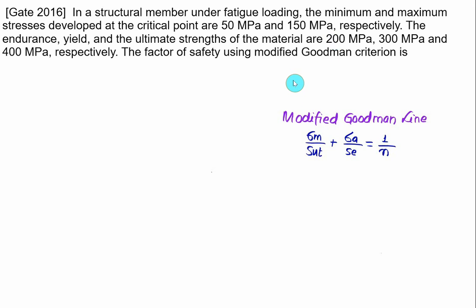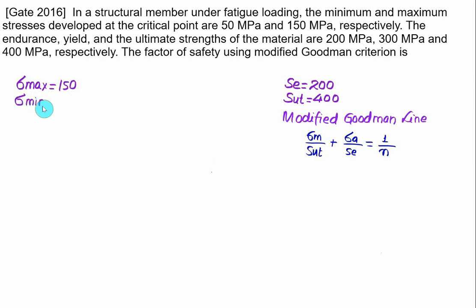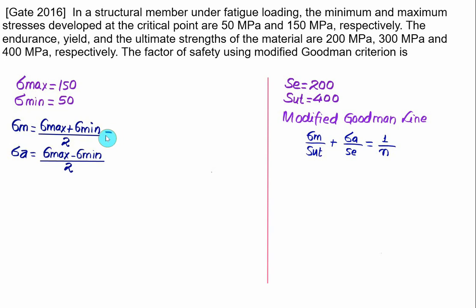The endurance limit is 200 MPa, so SE equals 200 MPa. We use SUT equal to 400 MPa. Sigma max is positive 150 MPa and sigma minimum is 50 MPa. The mean stress equals sigma max plus sigma min divided by 2, which is 150 plus 50 equals 200 divided by 2, equal to 100 MPa. The amplitude stress is sigma max minus sigma min divided by 2, which is 150 minus 50 equals 100 divided by 2, equal to 50 MPa.